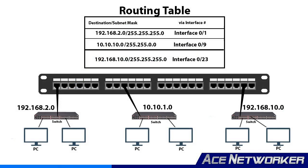A routing table or routing database on a router is stored in its RAM memory. The routing table contains information about all of the directly connected networks and can be updated either dynamically — automatically by the router using routing protocols, which will be covered in a later lesson — or statically, where an admin manually goes in and enters the routes and networks on each router.